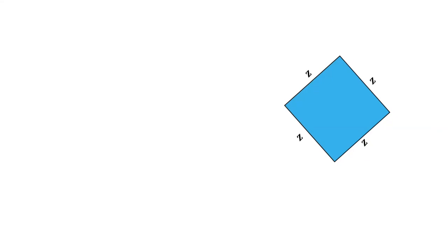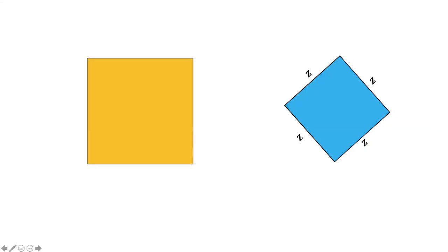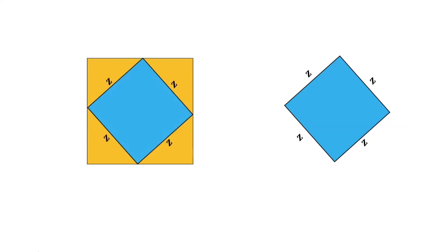Now let's consider this figure to be the bigger square. This smaller square is placed inside the bigger square. So the smaller square is inside the bigger square, and its side is Z.